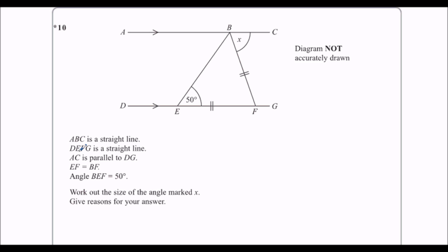ABC is a straight line. DEFG is a straight line. The parallel lines are marked with these arrows. These two are equal. They're marked with the two lines.